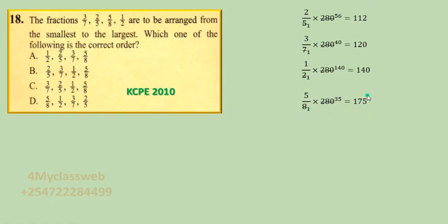These products now determine which fraction is the largest and which is the smallest. Arranging in ascending order, we begin with 2 over 5 (112), then 3 over 7 (120), then 1 over 2 (140), and finally 5 over 8 (175). Going back to the multiple-choice options, option B matches this arrangement, so B would be the correct answer for that question.